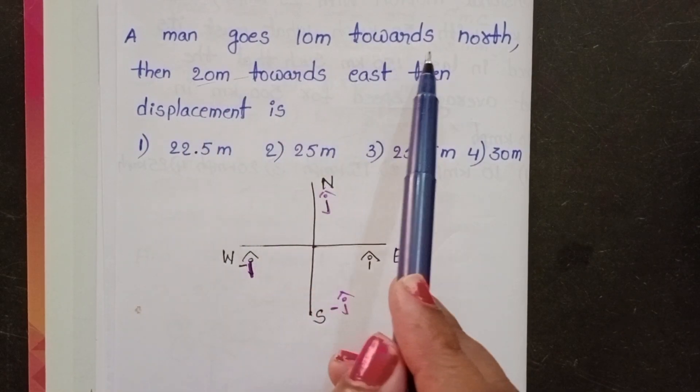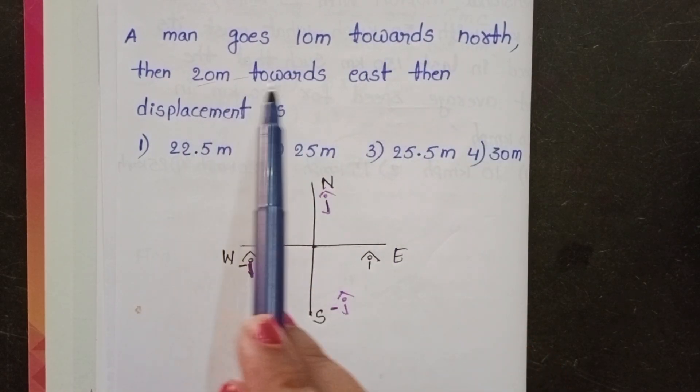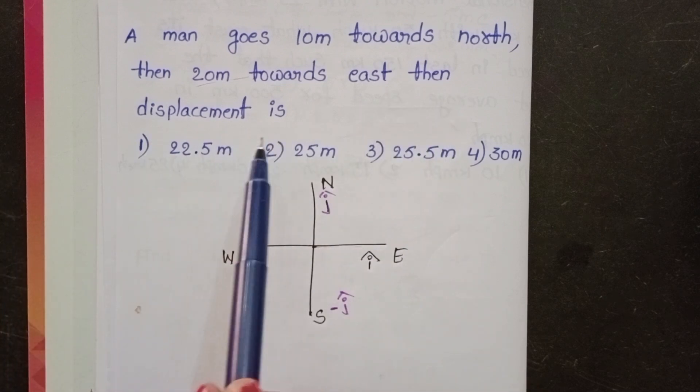A man goes 10 meters towards north, 20 meters towards east. Then displacement is.